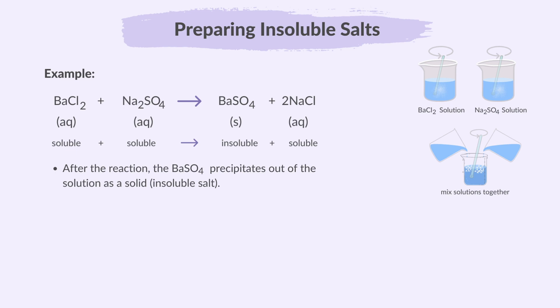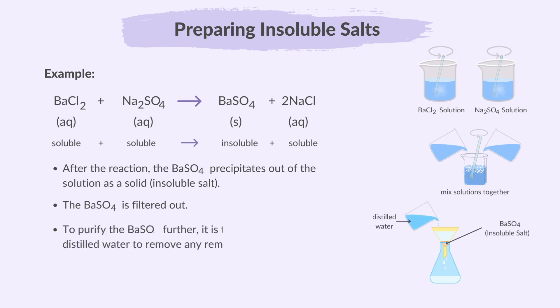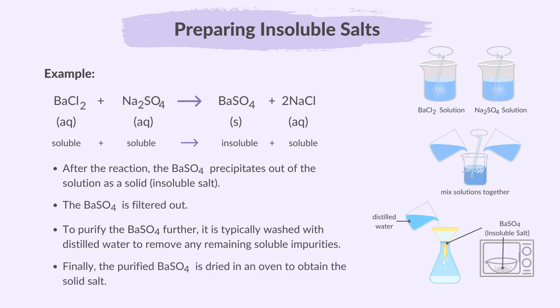Barium sulfate is an insoluble salt; any remaining sodium chloride stays dissolved in the solution. The barium sulfate is filtered out, then washed with distilled water to remove any remaining soluble impurities. Finally, the purified barium sulfate is dried in an oven to obtain the solid salt.